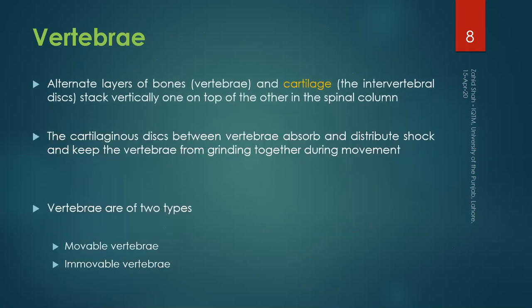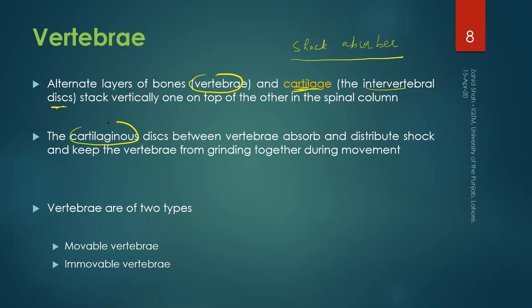There are alternate layers of bone — called vertebrae — and cartilage, called the intervertebral disc. This disc is a shock absorber. There is one intervertebral disc between two adjacent vertebrae, except for the first two and towards the end. The disc is made up of cartilage, a soft tissue, so it absorbs and distributes shocks. It also prevents the vertebrae from colliding with each other during movement.